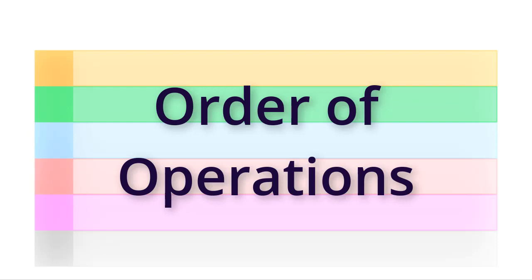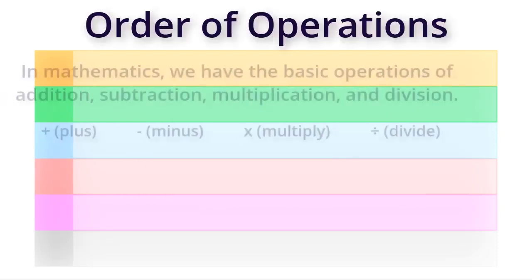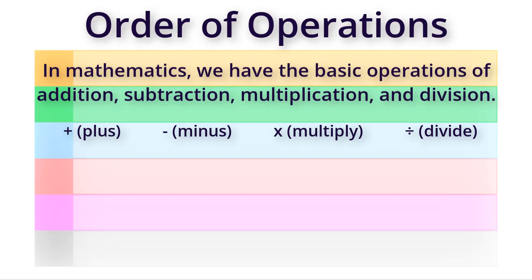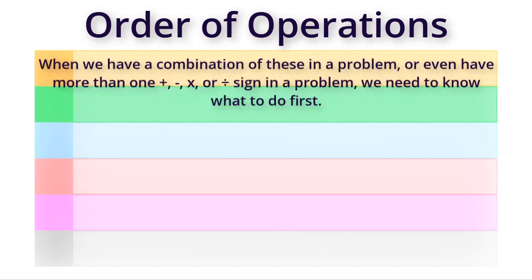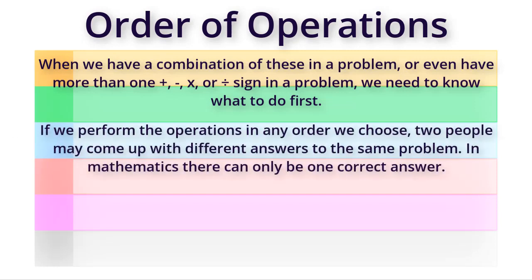Order of operations in mathematics. We have the basic operations of addition, subtraction, multiplication, and division. We also use parentheses for grouping, raise numbers to powers, and evaluate roots. When we have a combination of these in a problem, or even have more than one addition, subtraction, multiplication, or division sign in a problem, we need to know what to do first. If we perform the operations in any order we choose, two people may come up with different answers to the same problem.